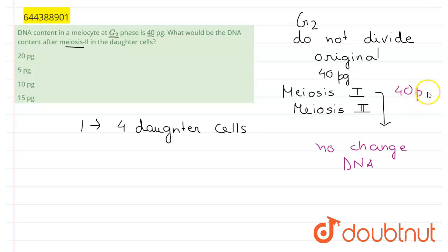But after the end of meiosis 2, the DNA is halved from the original daughter cell. As the DNA becomes half, originally it was 40 picograms, so the daughter cells will have 20 picograms of DNA.